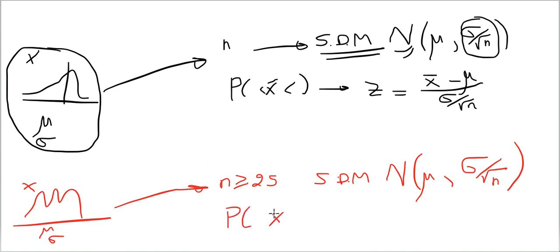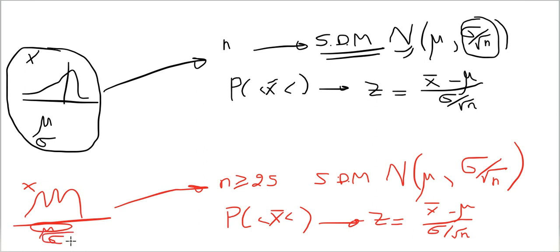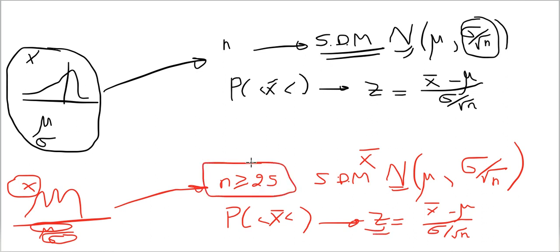It will still have sigma_X̄ equal to sigma over the square root of n, meaning you can still answer: what is the probability of X̄ between two values, using the same Z formula — X̄ minus mu over sigma divided by square root of n. So even though X did not have a normal distribution, X̄ will. This is thanks to a theorem called the Central Limit Theorem, which says when n is greater than or equal to 25, the sampling distribution of the mean will be normal regardless of the original distribution.